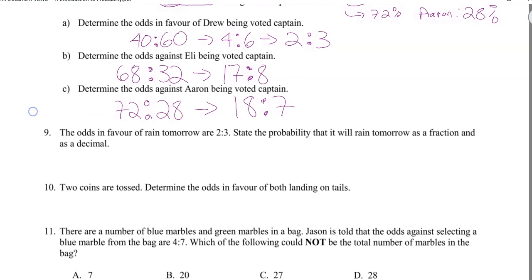The odds in favor of rain tomorrow are 2 to 3. State the probability that it will rain tomorrow. In favor: 2. Probability is favorable over total, so 2 plus 3 equals 5. The probability as a fraction is 2/5, as a decimal 0.4, and as a percent 40%.